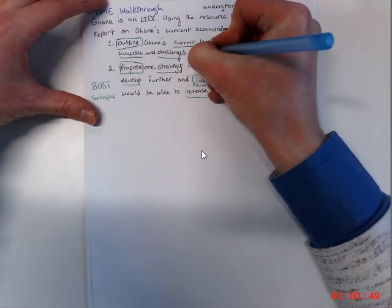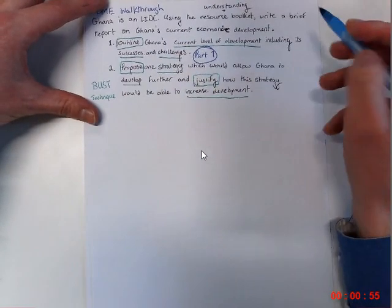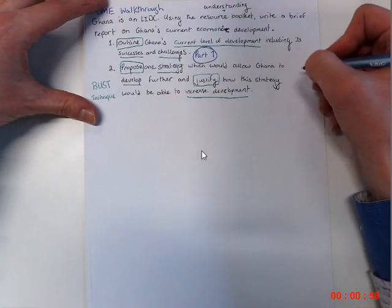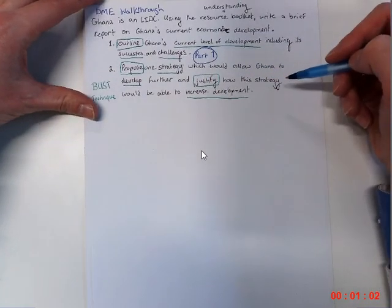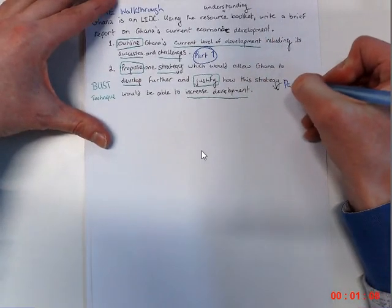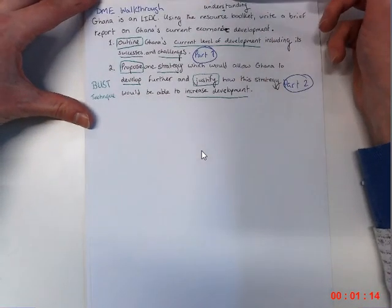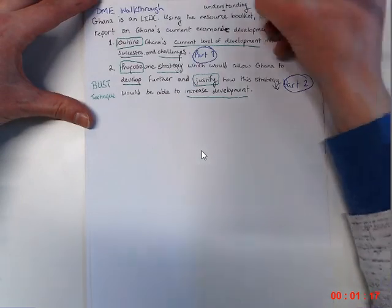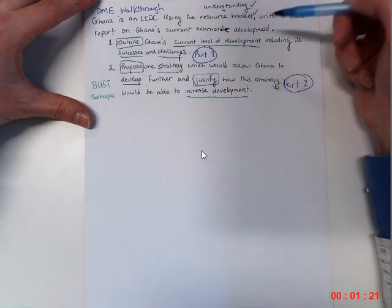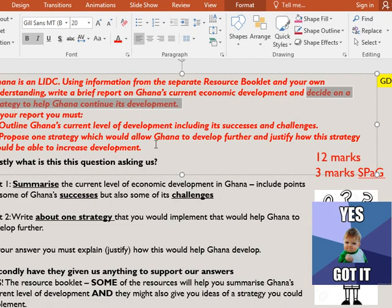So outline Ghana's current level of development including its successes and challenges. That's part one. We're going to start off with that in a bit and then we're going to propose one strategy which would allow Ghana to further develop and justify how this strategy would be able to increase development. So the development strategy and how it increases development specifically and that's going to be part two.